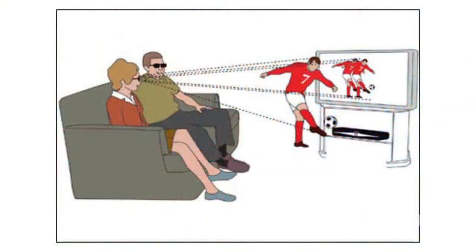Despite rather significant differences, there are several basic parameters for transmission of television images. One of the first of these is the number of lines. The more lines there are, the more information on the screen is shown, and the higher the definition and image quality is.